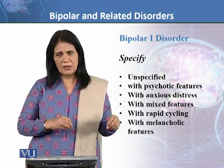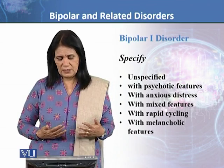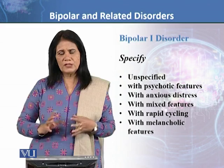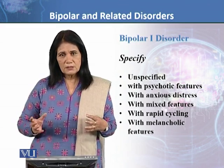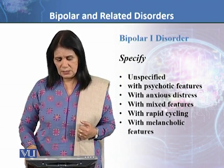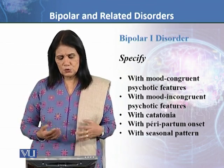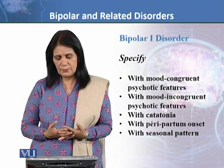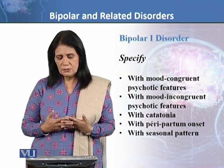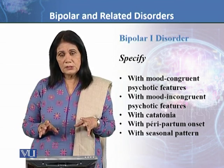Specify 'with rapid cycling' — where mood rapidly shifts from depression to mania and then back again. Also identify whether there are melancholic features — not full-blown depression but depressive features; melancholia is the older term for depression. You also need to specify whether the disorder presents with mood-congruent psychotic features or mood-incongruent psychotic features within the bipolar 1 picture.